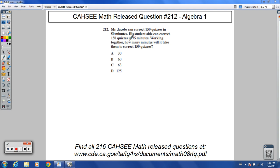Welcome to released question 212 for CAHSEE Math. It says: Mr. Jacobs can correct 150 quizzes in 50 minutes. His student aid can correct 150 quizzes in 75 minutes. When working together, how many minutes will it take them to correct 150 quizzes?